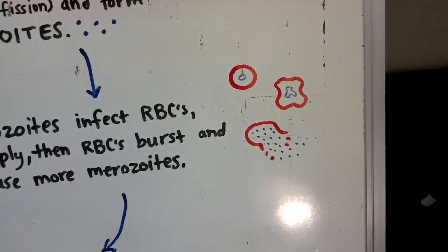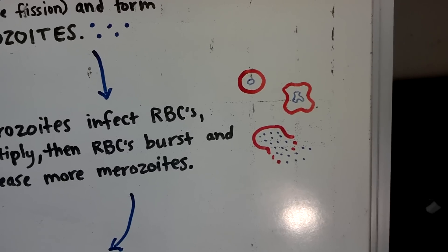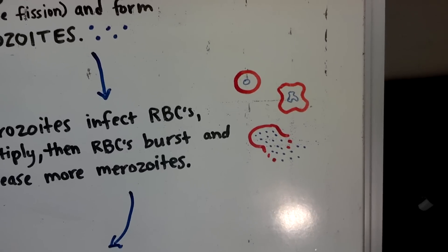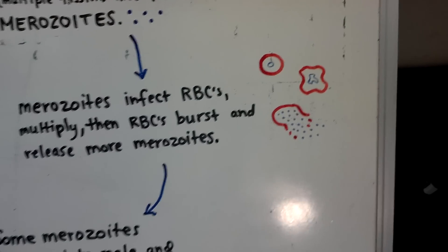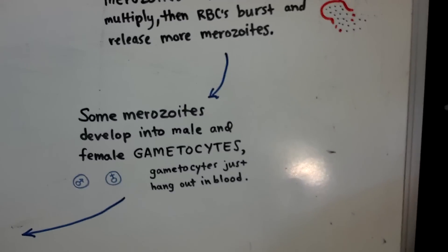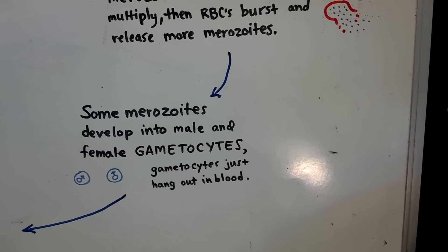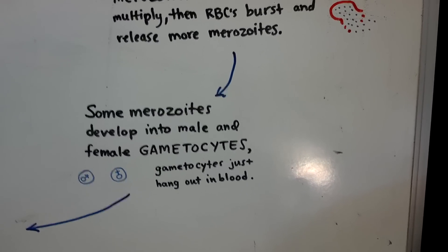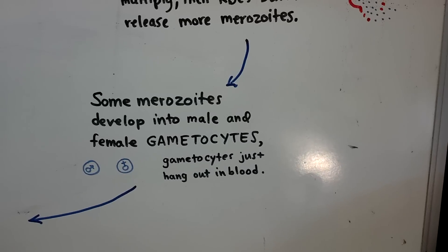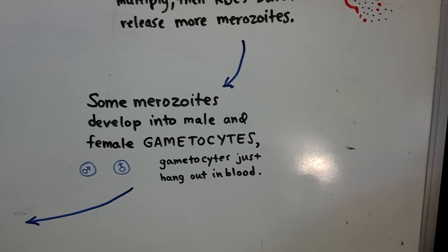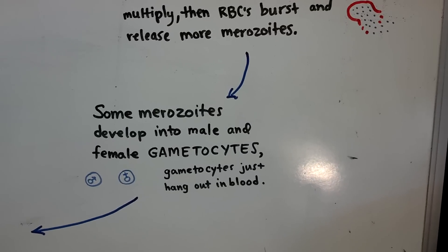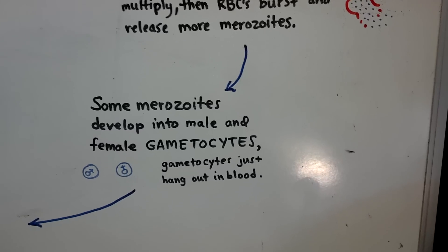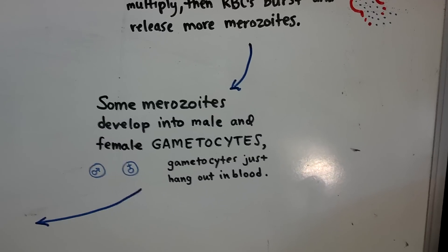Here we go — we've got the ring cycle, and then it's expanding, and then kaboom! More merozoites spreading out throughout the blood. Some merozoites develop into male and female gametocytes, and these gametocytes just hang out in the blood. The other merozoites will go on and infect more red blood cells, but the gametocytes are just going to hang out.